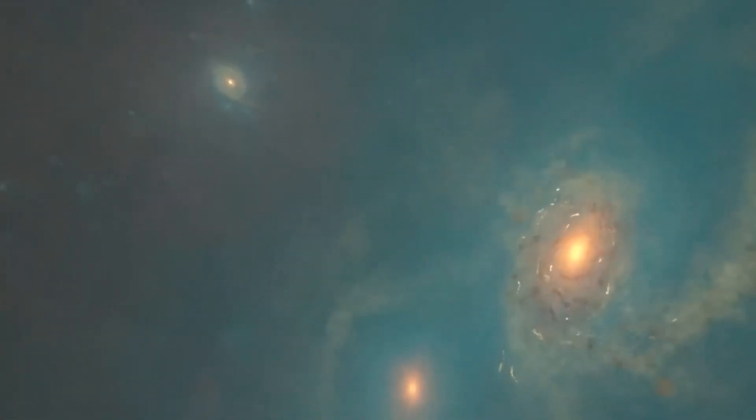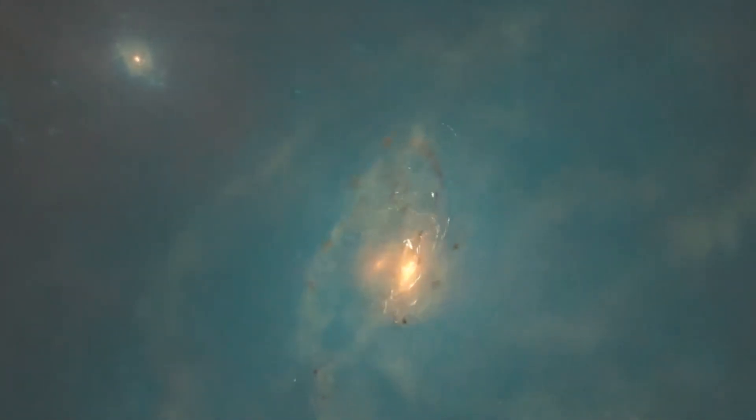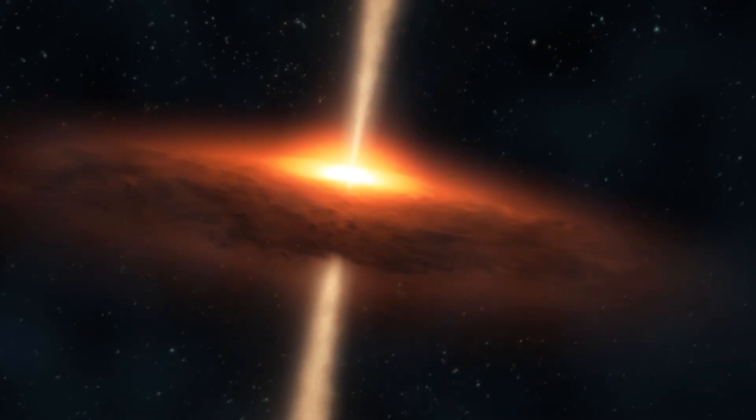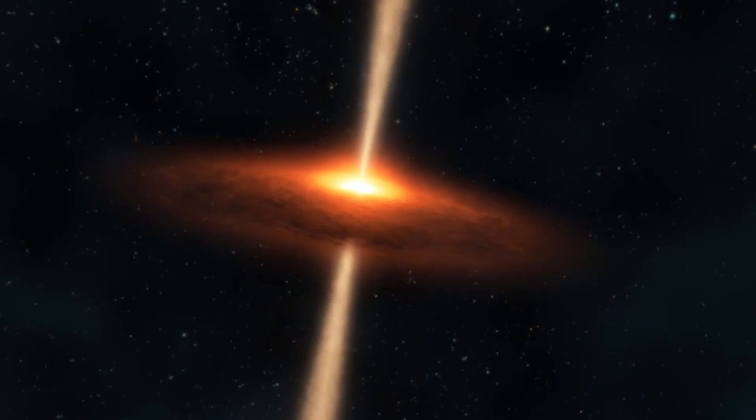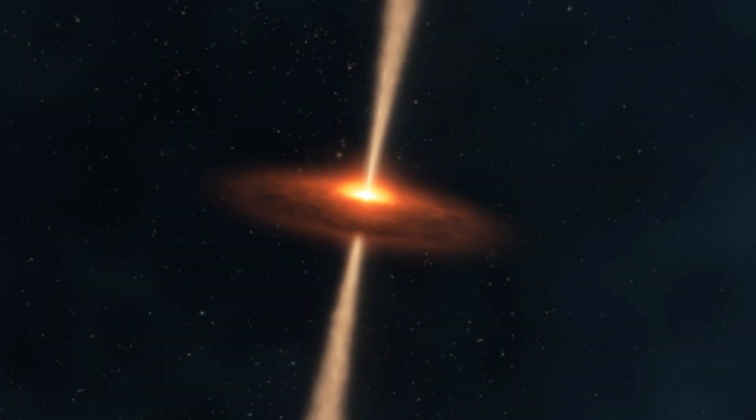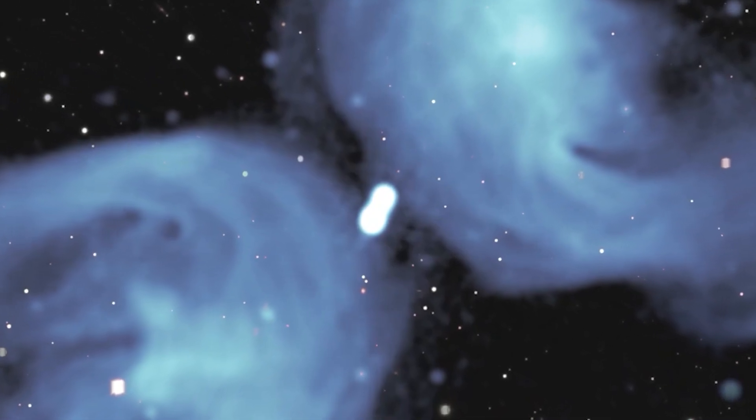The third clue came from examining the lobes and nucleus of the galaxy. As we already know, the bright and shiny center of a galaxy is the nucleus. While the lobes are these diagonal regions on opposite sides, but here comes the bummer. The lobes and nucleus were not connected here.